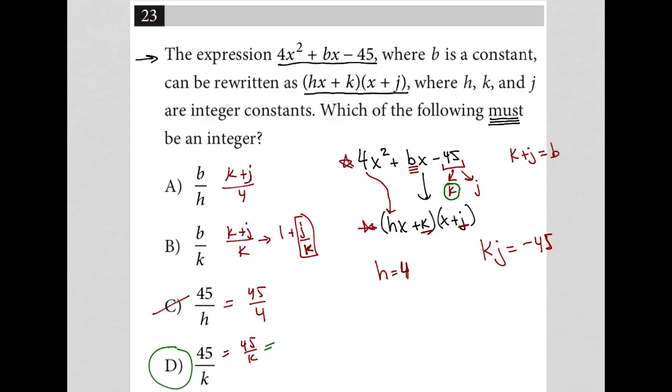This is the one that for sure must be correct because we know that k must be a factor of negative 45. That's how we would factor this trinomial in the first place. Two terms, in this case k and j, when multiplied by each other equal negative 45. Those two terms would go in these positions in the product of binomials.